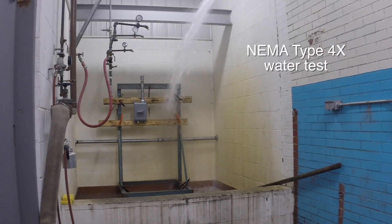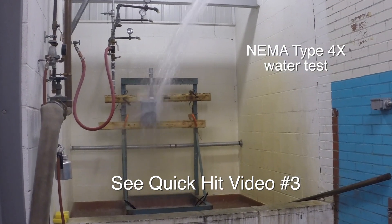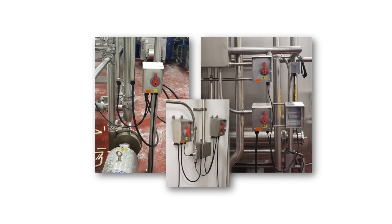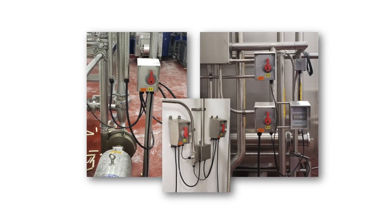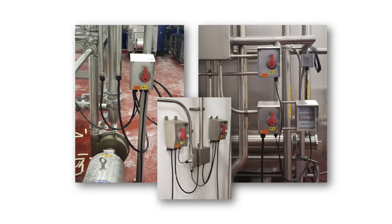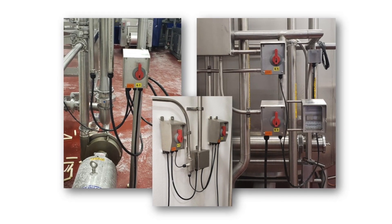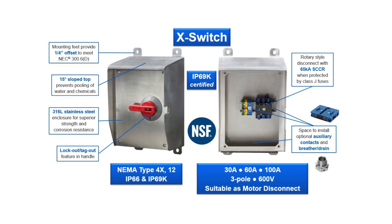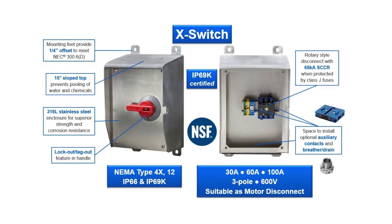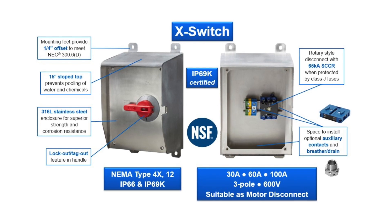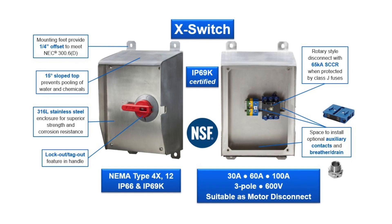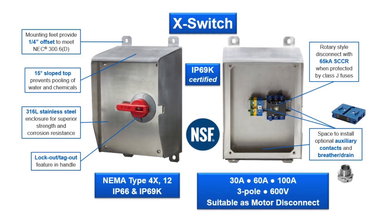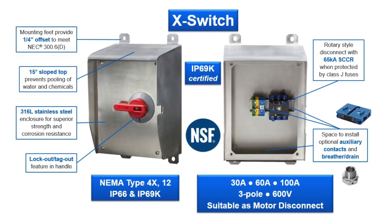These units also carry an NSF rating for use in food processing areas. Many of the referenced environmental ratings were fully explained in a previous video. Here's an example showing one of these disconnects being subjected to the NEMA 4X water test. Aeroheart was the first to introduce a motor control disconnect in a stainless steel enclosure with a small footprint, specifically designed for food processing areas with high-temperature washdown. The second-generation X Switch is shown here along with its key features and ratings — note the mounting feet with a quarter-inch offset, the sloped top, the 316L stainless steel enclosure, and the IP69K rating. An optional breather drain can be installed in the bottom of the enclosure to prevent water buildup due to condensation, which is typically present in a food processing environment.